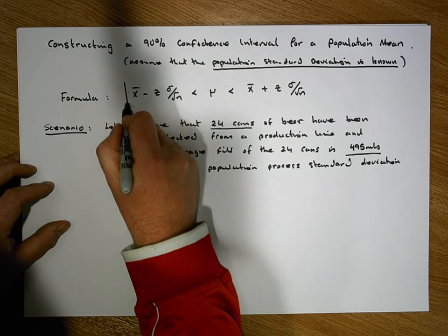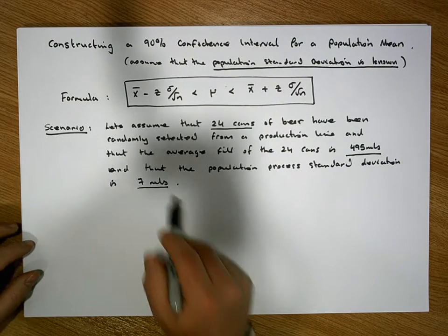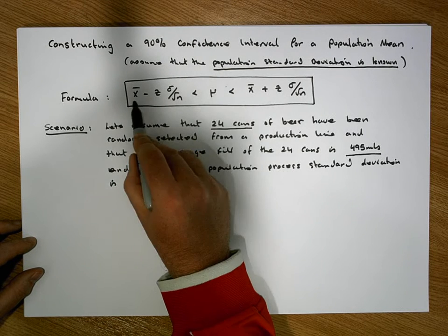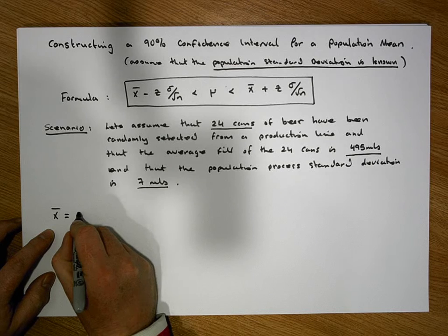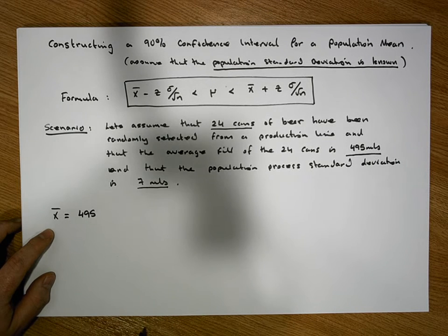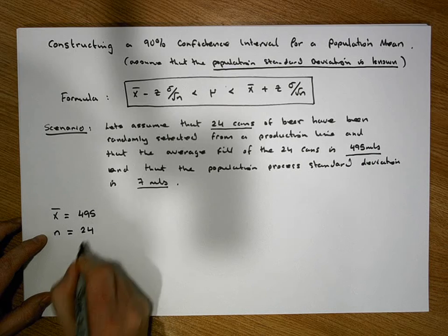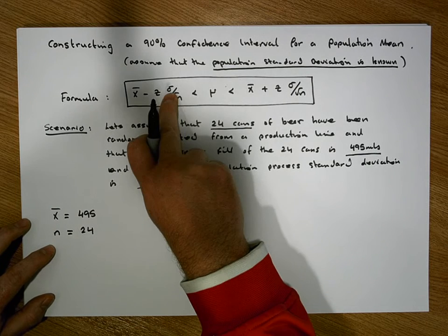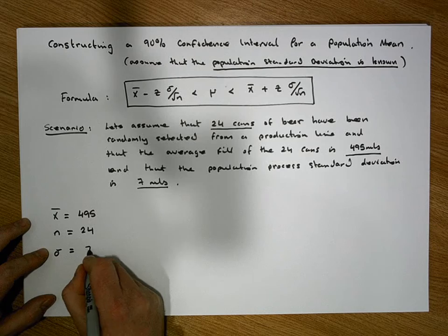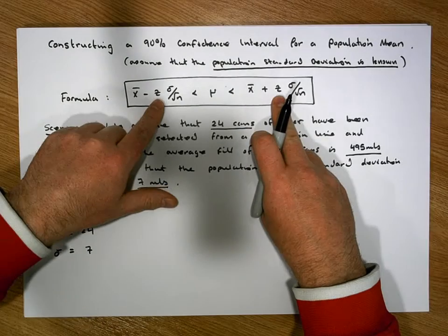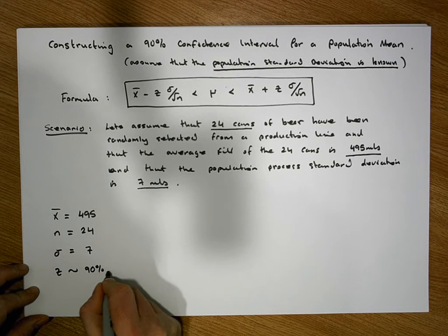From the formula's perspective, there are a number of parameters and statistics we require. We need to know x-bar — the sample mean — which in our case is 495 mils. We need to know n, the sample size, which is 24. We need to know the population standard deviation sigma, which is 7 mils. The only other thing we're missing is the z value associated with a 90% confidence interval.